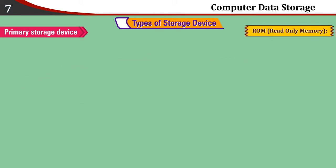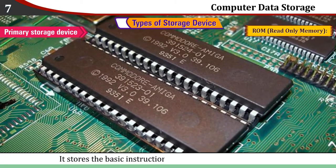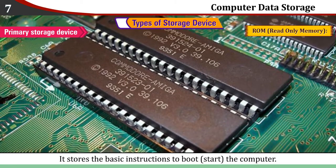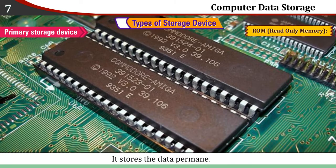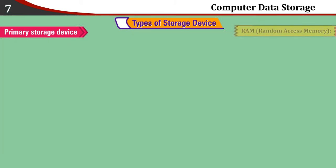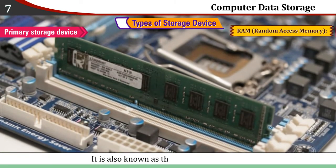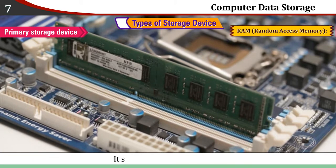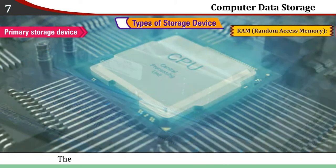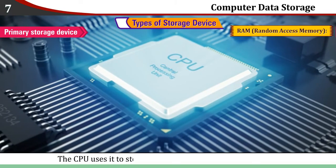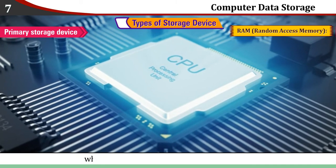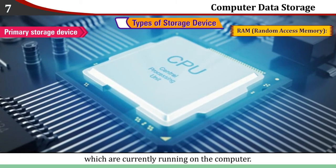ROM stores the basic instructions to boot the computer. It stores data permanently. RAM is also known as the computer memory. It stores data temporarily. The CPU uses RAM to store the supporting files of the programs which are currently running on the computer.